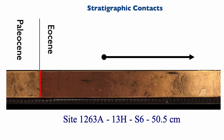Looking at conformable contacts — meaning contacts where there is no gap in time — we can distinguish two types: abrupt or gradational. Here, between the Paleocene and the Eocene, we have a conformable contact with no time gap in this deep sea core, but the contact is very abrupt. We go from almost 100% limestone to almost 0% limestone.